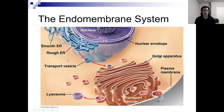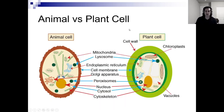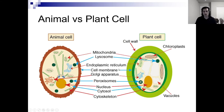The endomembrane system encompasses your smooth ER, rough ER, and Golgi apparatus — that's all this is. Animal versus plant cells: both are eukaryotes so they both have nuclei. Things that differentiate plant cells are cell walls, vacuoles, and chloroplasts. Your plant cells will have cell walls, chloroplasts, and maybe vacuoles.